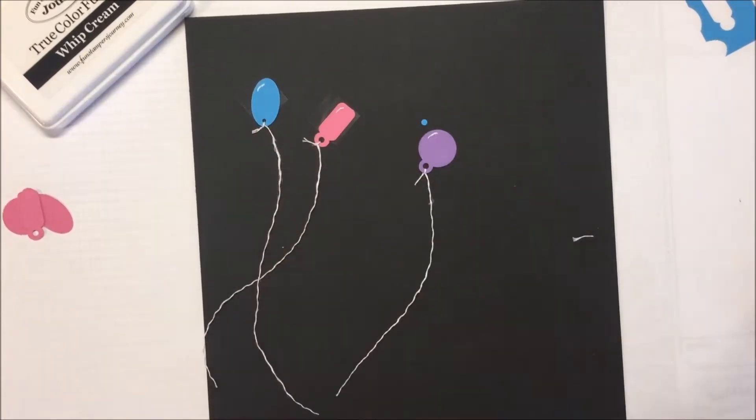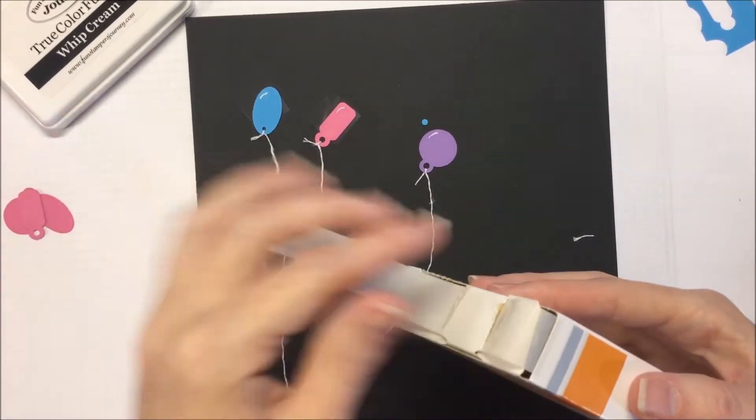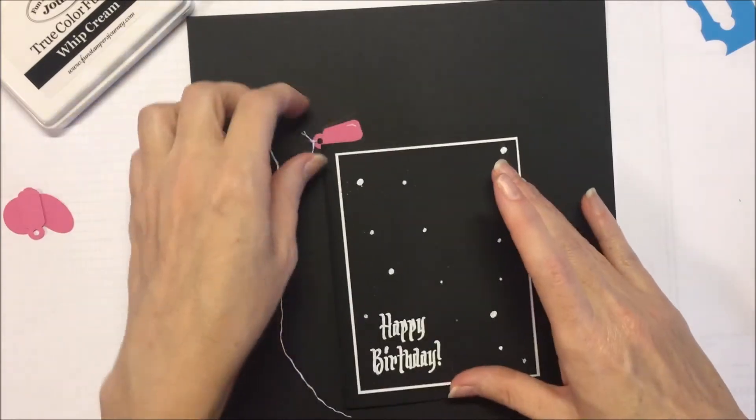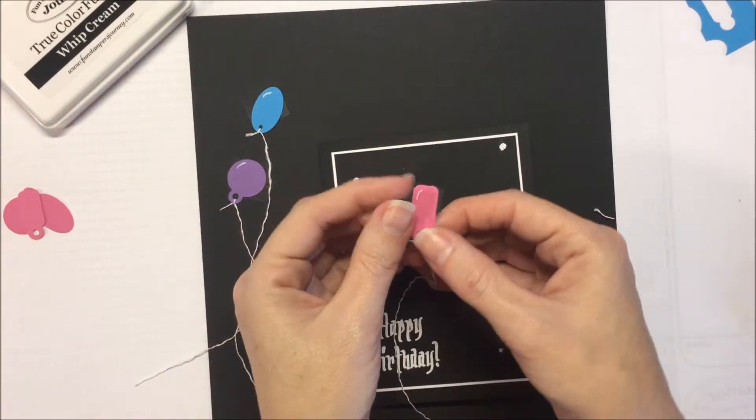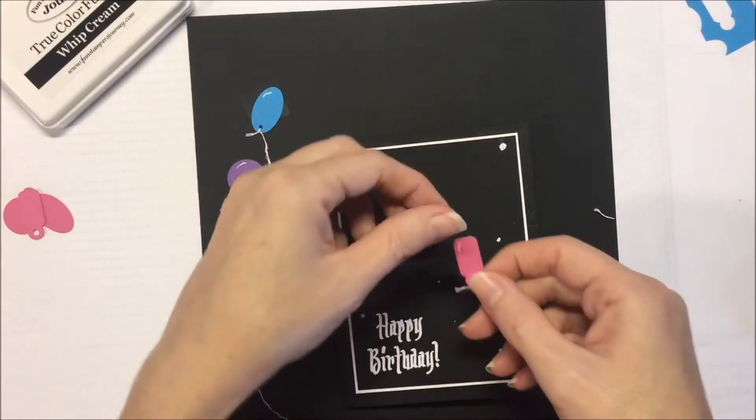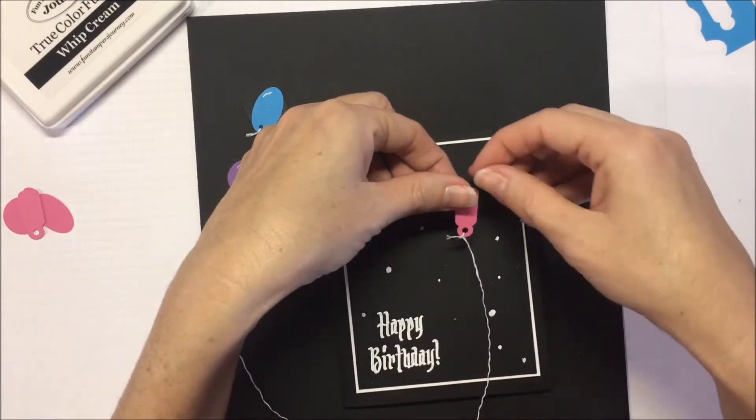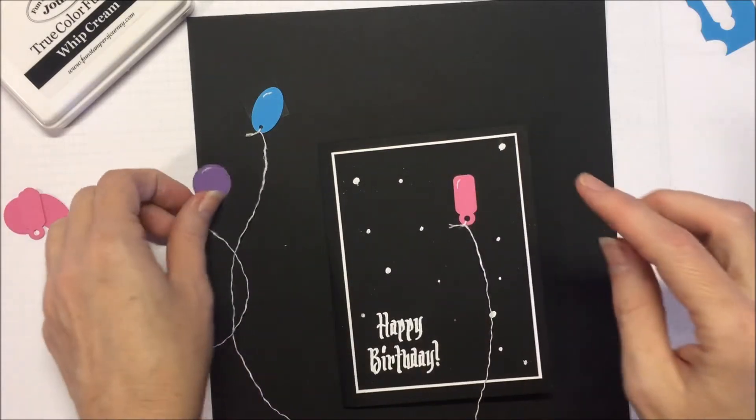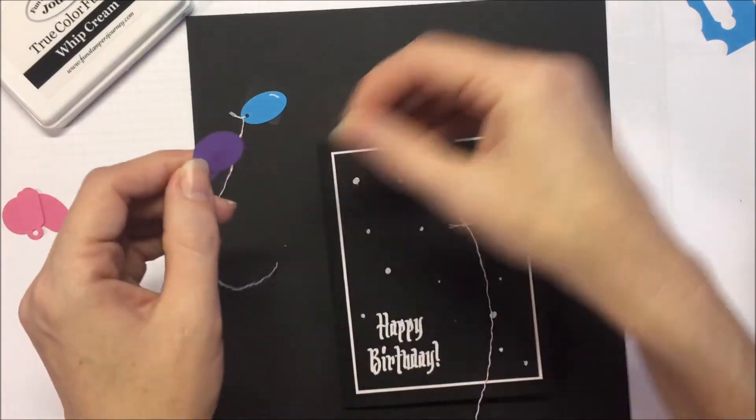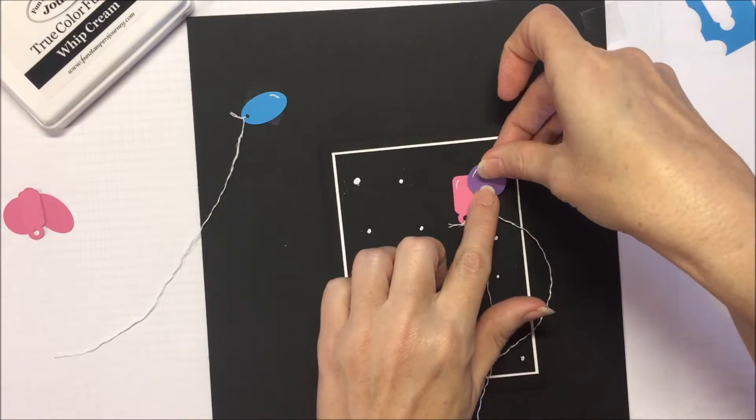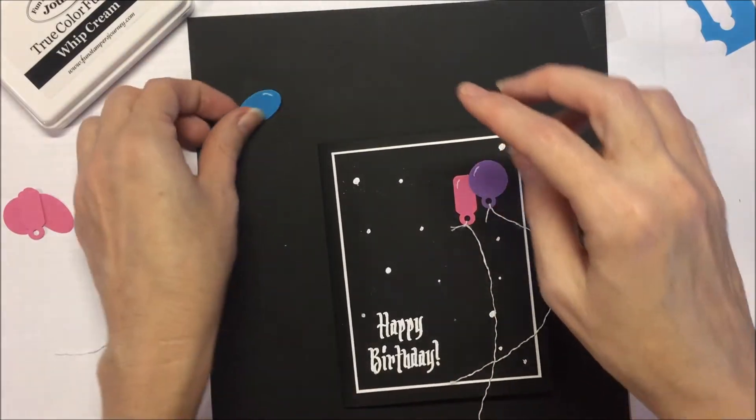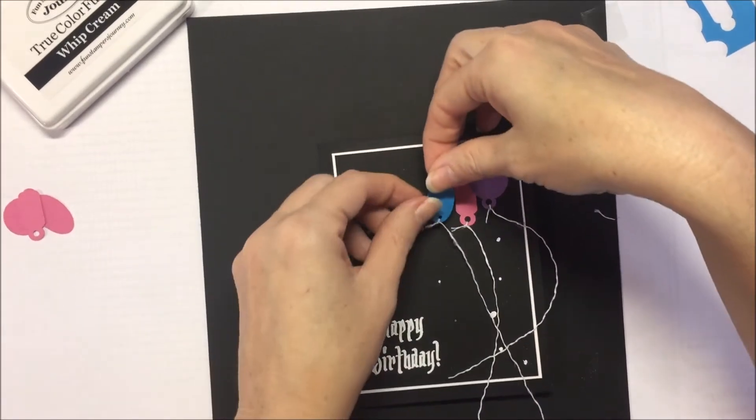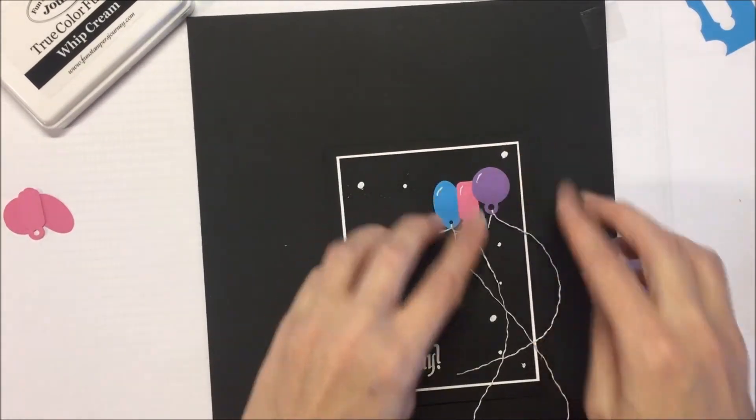And then we'll use a glue dot to adhere the balloons to the card base. For the sketch, it had kind of a rectangular shape in the middle. So I'm just gonna put my rectangular balloon there. And then the circle was kind of up and off to the right. So we'll just put that there. And then the oval shape was on the left. Put him there.